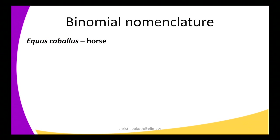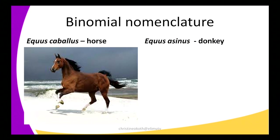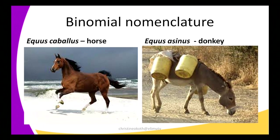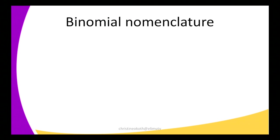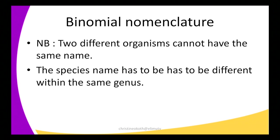Another example: we have a horse and a donkey. The scientific name of a horse is Equus caballus, and a donkey is called Equus asinus. They are all of the same genus but of different species. Two important rules to remember: two different organisms cannot have the same name, and the species name has to be different within the same genus.